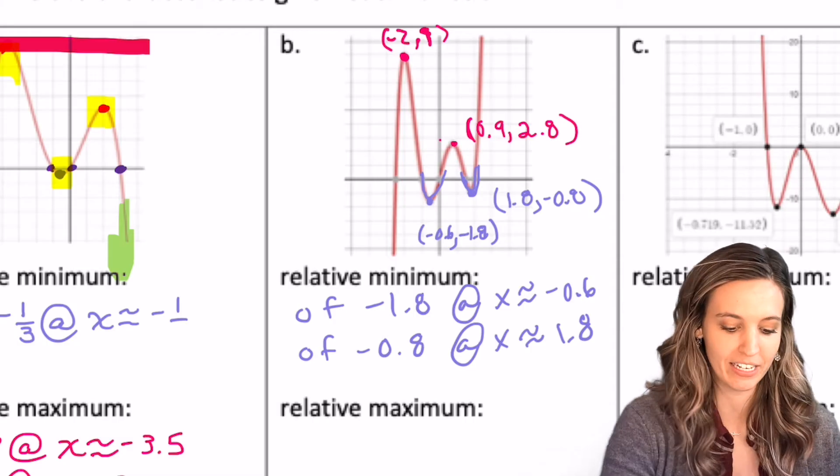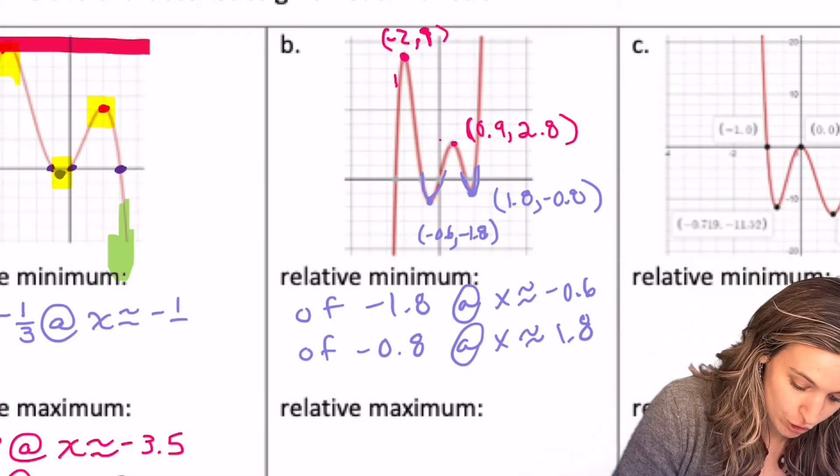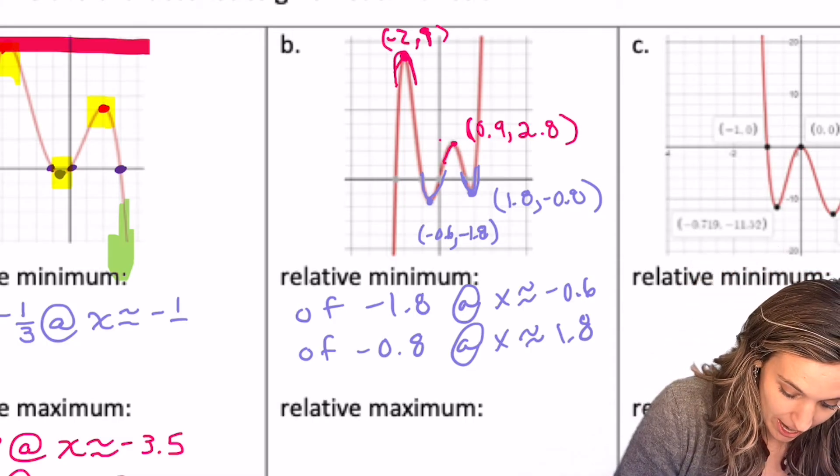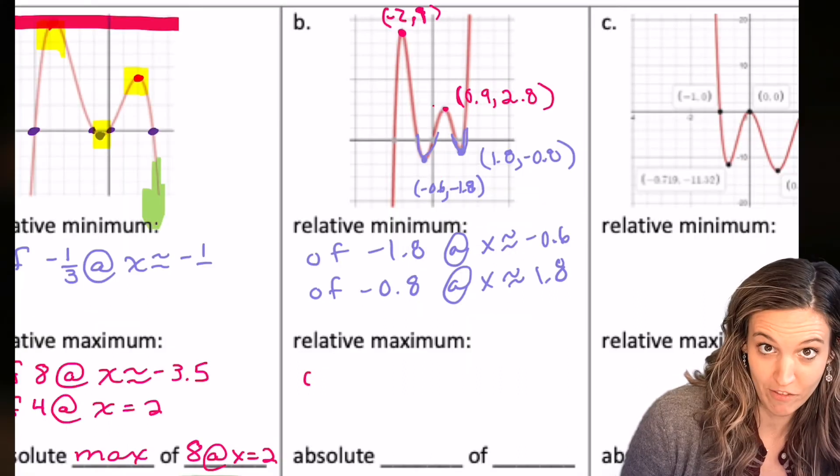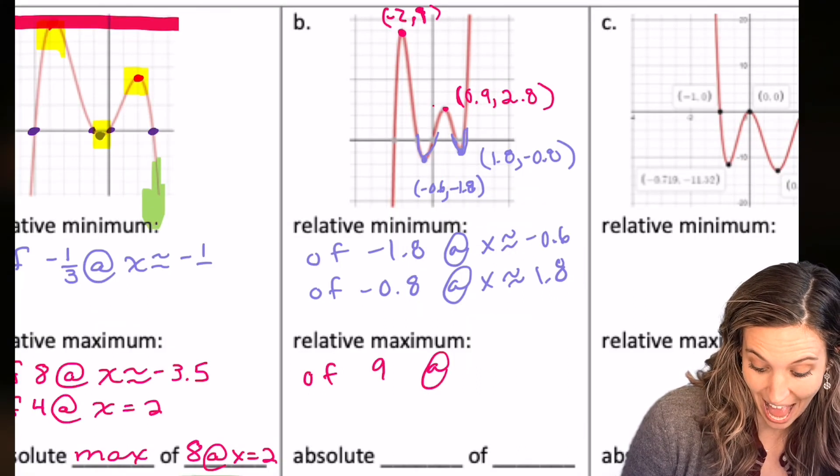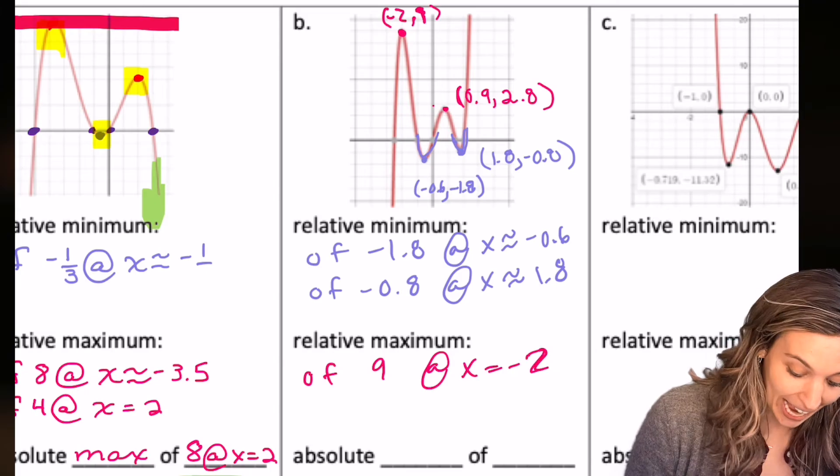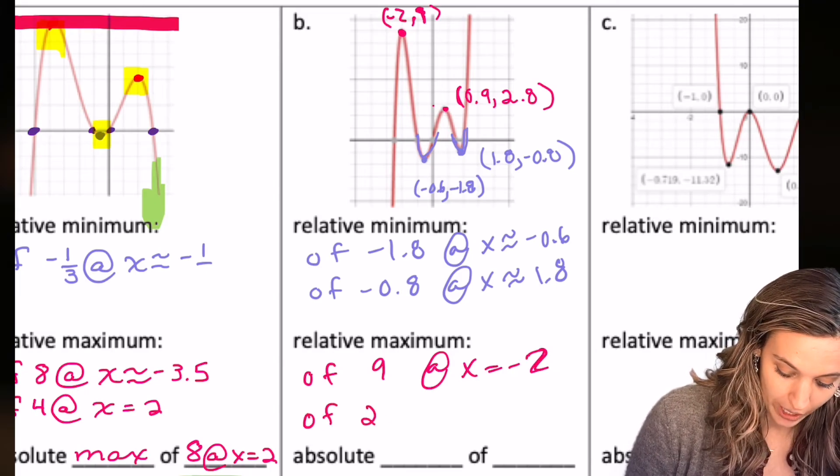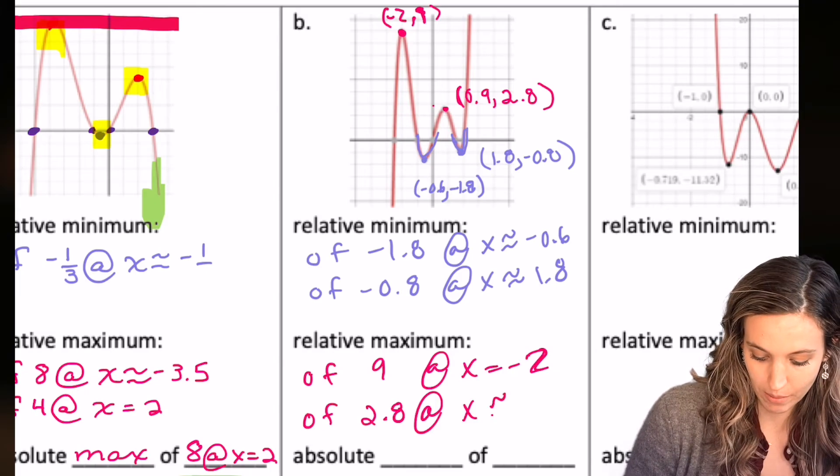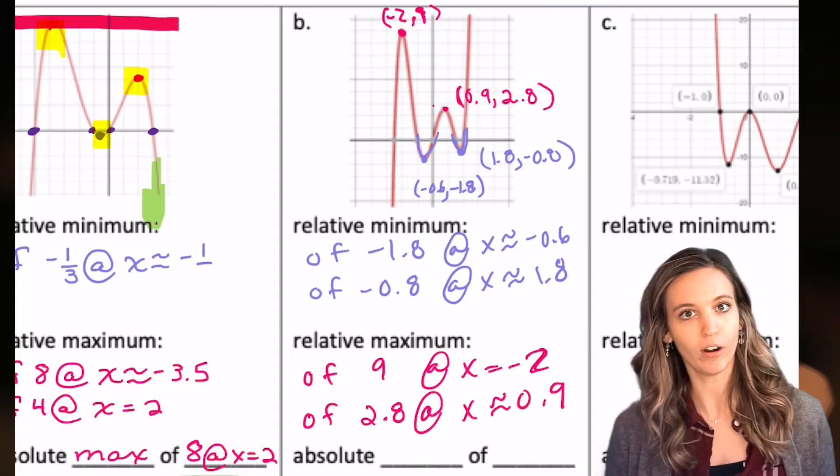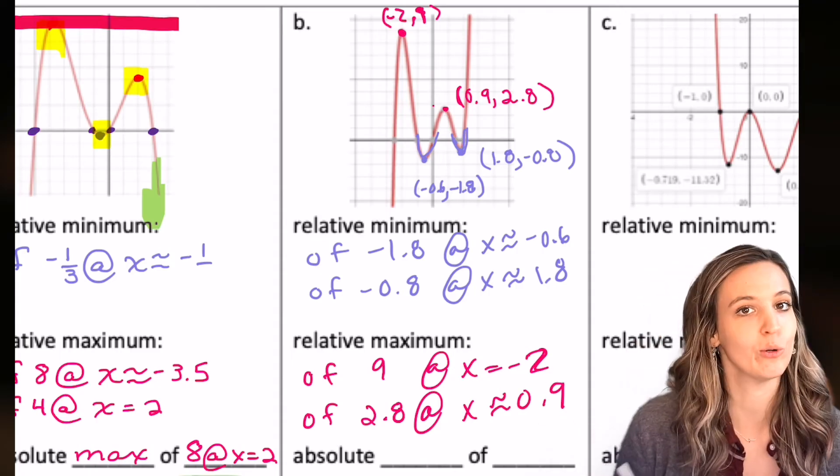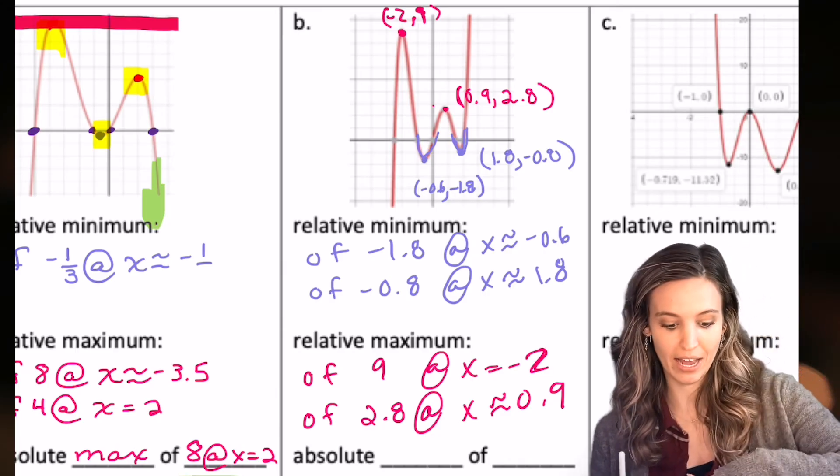What about my relative maxes then? So I have two again, one here and one here. One relative max of 9 at x equals negative 2. And one relative max of 2.8 at x approximately 0.9. Remember, our min or max value is the y value at the x coordinate.